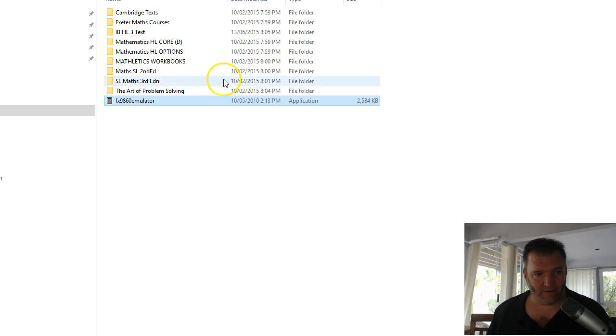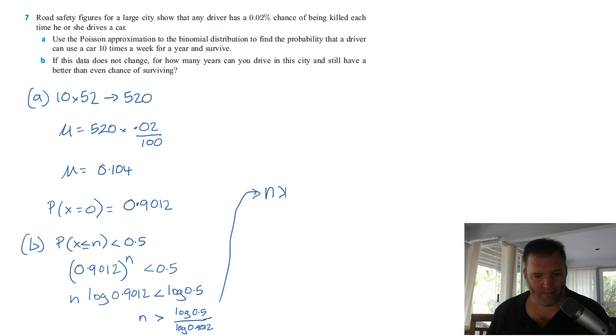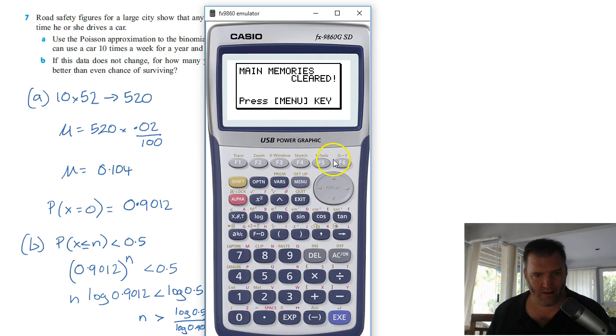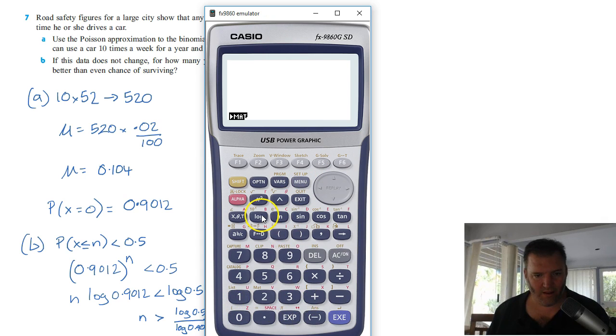So let's get our calculator out. It's disappeared. And have a go. Bring that back. Menu number 1. And we just want log, and it doesn't matter which log I'm doing, but I'm going to do log 0.5 divided by log 0.9012.